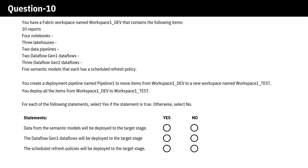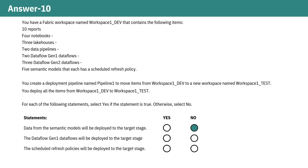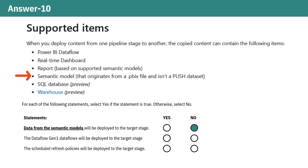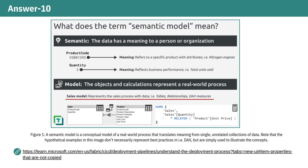Make sure you read the statements carefully before answering them. The answer for the first statement is No, because when you deploy semantic models from one workspace to another, the actual data used by these models isn't typically deployed — only the model itself. The data resides in the original workspace, and the semantic model, which includes the tables, measures, and relationships, is deployed to the new workspace. You'll need to refresh the dataset in the target workspace to fetch the data.